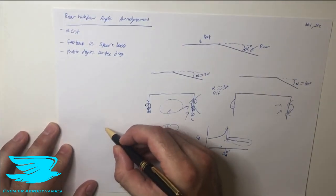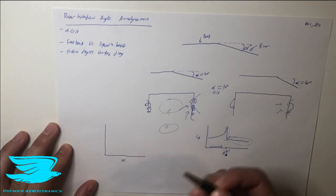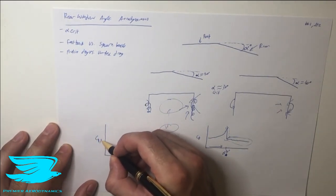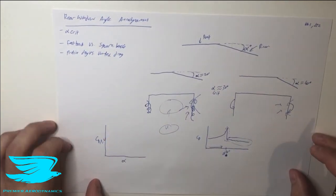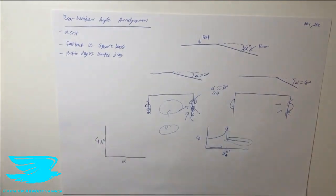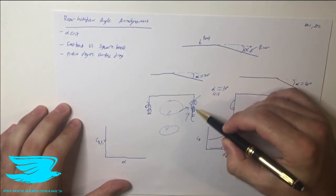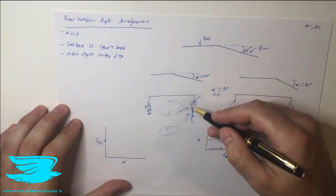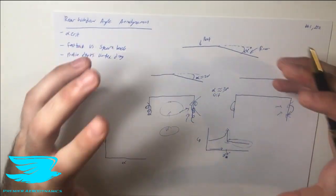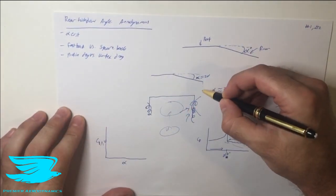Let's talk about profile drag versus vortex drag. On another graph with alpha on the x-axis and drag on the y-axis, we can separate the drag into profile drag and vortex drag. Vortex drag is very intuitive — it's the drag we get directly from the vortices that are forming.